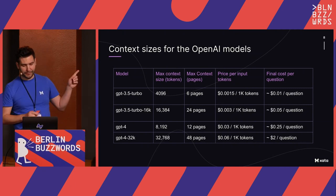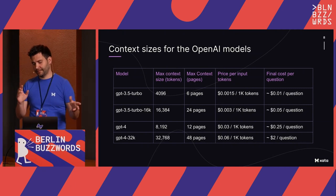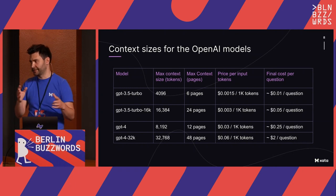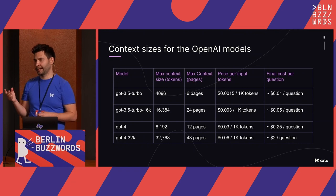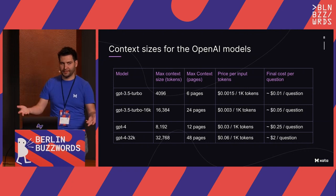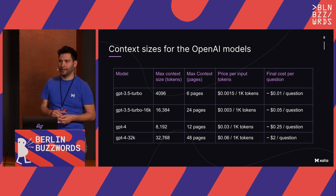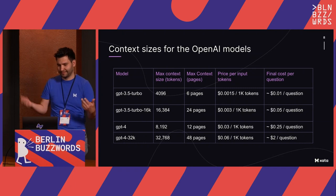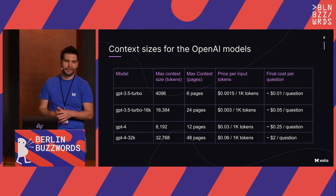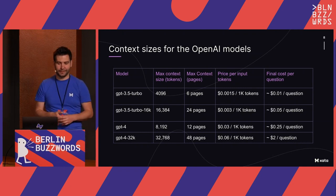GPT-3.5 Turbo, our default right now, gives a context size of 4K tokens — about 3,000 words or six pages of text. It's cheap: about one cent per question, which is fine even for a public website where anyone can ask questions. Since last week there's a new model, GPT-3.5 Turbo 16K, which has four times the context. It's twice as expensive per token, which means the final cost per question comes to about five cents — so 20 questions per dollar. Still manageable, but you have to be careful.